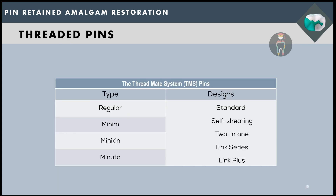Threaded pins are the only type widely used today. They are marketed by a brand called the TMS pins, or the Threadmate System, in four different sizes: Regular, Minim, Minikin, and Minuta — Regular being the biggest and Minuta the smallest. All these pins are available in different designs, including the standard design where a hand wrench is used, self-shearing, two-in-one, link series, and link plus.